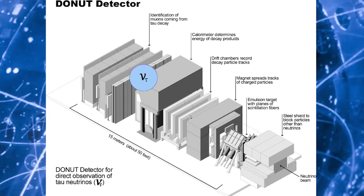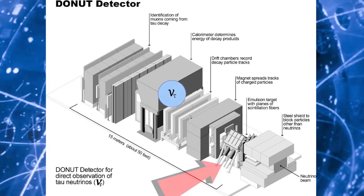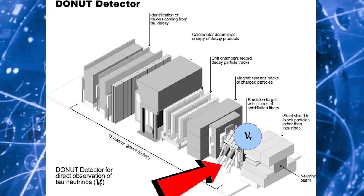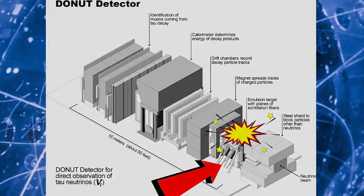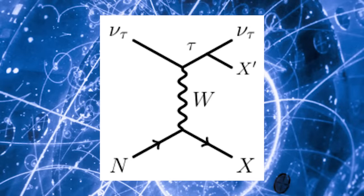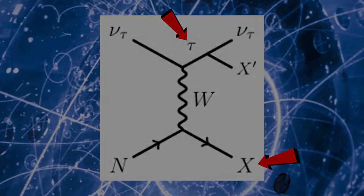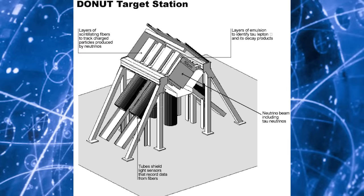These Tau neutrinos now enter the most important part of the DONUT experiment, the hybrid emulsion detector. The vast majority of Tau neutrinos pass straight through this detector, but since the flux of neutrinos is so high, occasionally one does interact within the detector. When a Tau neutrino interacts with an atomic nucleus in the detector, it creates a negatively charged Tau lepton and various other charged products. These charged products can be picked up by the emulsion detector, which is composed of a repeated structure of emulsion films.